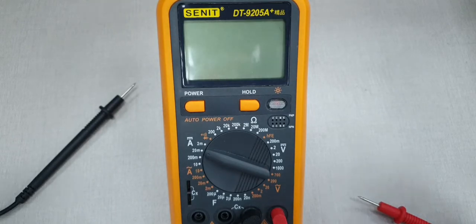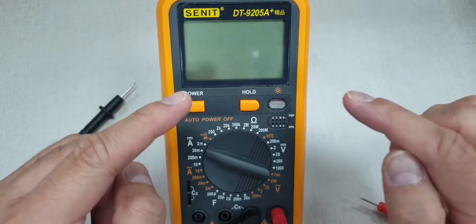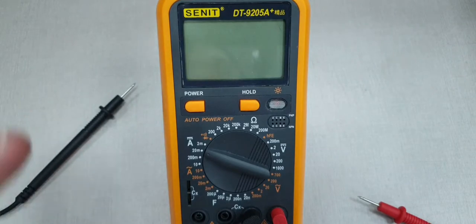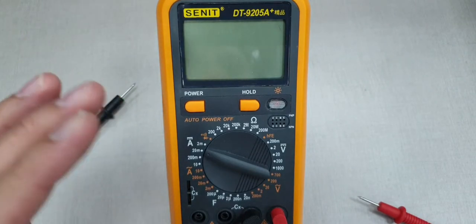We're going to use a CENET DT-9205A Plus digital multimeter from Lazada which originated from China.